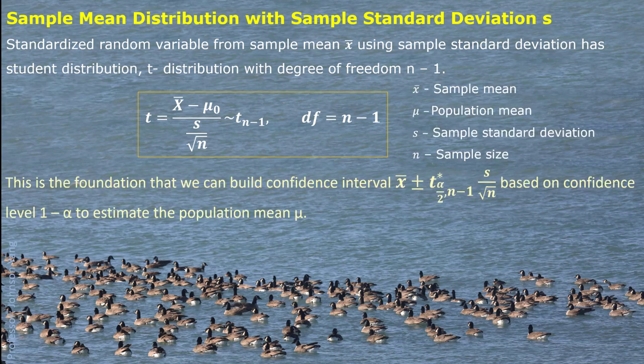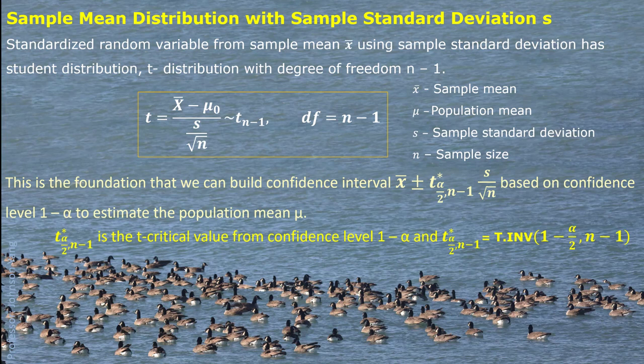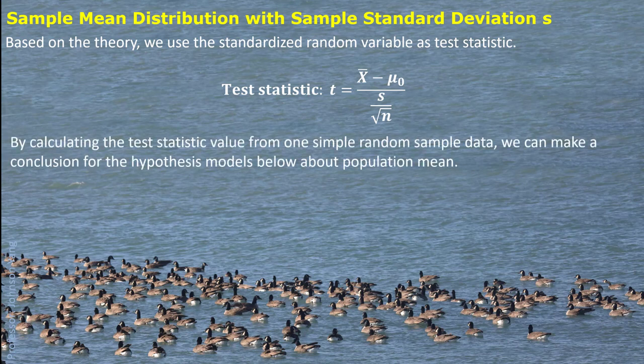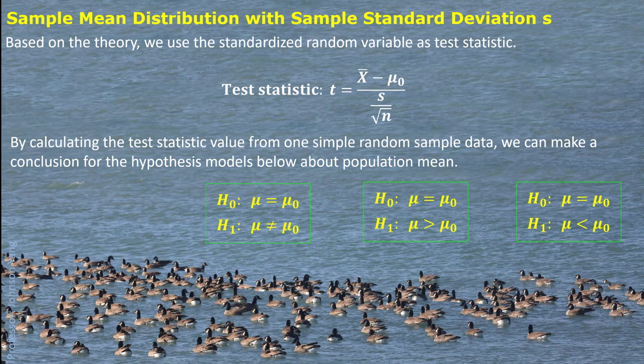With this sampling distribution, we can build up a similar confidence interval, with the information replaced by sample standard deviation. Similarly, we can find the t-critical value from an Excel function very conveniently. We can also use this standardized random variable as a test statistic, and by calculating the t-test statistic value from random simple sample data, make a conclusion for the hypothesis about the population mean — either two-tailed or one-tailed.